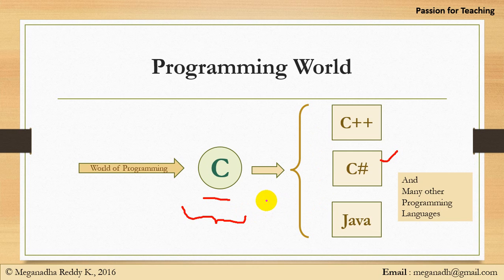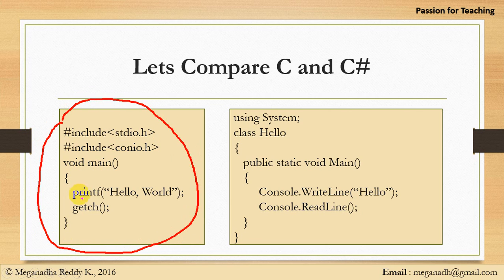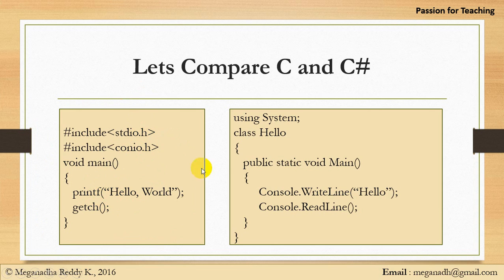For those with C language experience, let's compare C and C#. In a simple C program to print Hello World, stdio.h and conio.h are header files. Program execution starts from the main method, and printf is the method used to print output on the screen. Whatever we mention inside printf will be printed. The reason we include stdio.h is that the printf method is defined inside that header file.